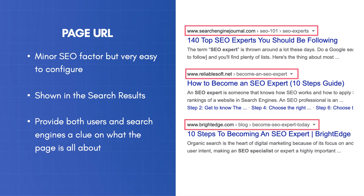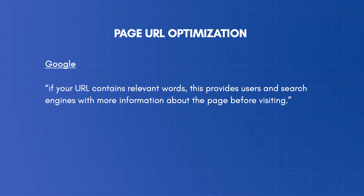There are a couple of reasons why you should optimize your URLs. First, they are shown in the search results above the page titles. Second, they provide users and search engines a clue on what the page is all about. As stated by Google, if your URL contains relevant words, this provides users and search engines with more information about the page before visiting.